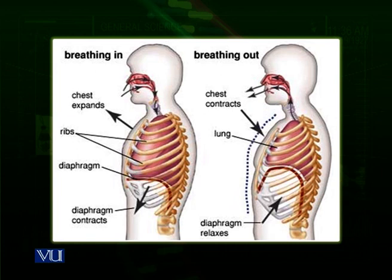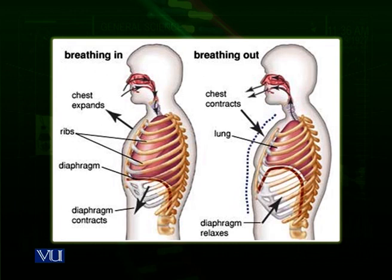There are two structures which help them. Lungs are surrounded by the ribs, and on the lower posterior side, there is a diaphragm — a floor of the chest. These two structures actually help the lungs in inhalation and exhalation. Look at the diagram which explains the process of inhalation and exhalation. During breathing in, the muscles of the ribs contract. When the muscles of the ribs contract, then the chest cavity moves